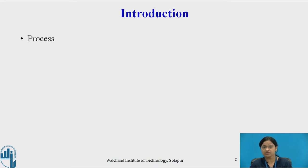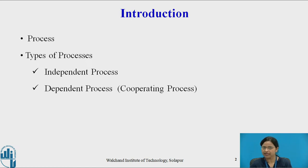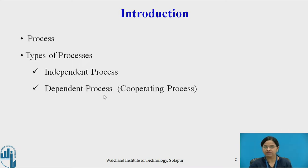Let us recall what a process is. As we know, a process is nothing but a program in execution. Many types of processes execute concurrently in the system. There are two types of processes: independent process and dependent process. An independent process cannot affect or be affected by any other process, and does not share any information with any other process. Whereas a dependent process, also called a cooperating process, shares information with other processes and can affect or be affected by any other process executing in the system.